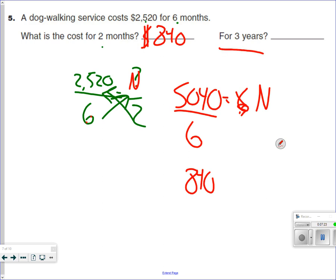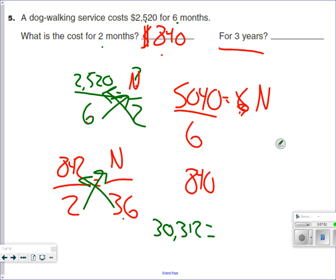So what is it for 3 years? So for 2 months, we'll use this number. So do 840 for 2 months, so for 3 years, that'd be 36 months. Let's cross multiply. 36 times 840 gives me $30,312, and it equals 2. And to get the N by itself, so I'm going to divide this by 2. My answer is 15,156.